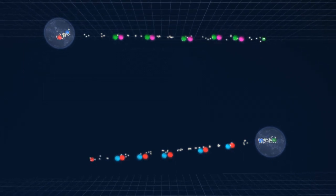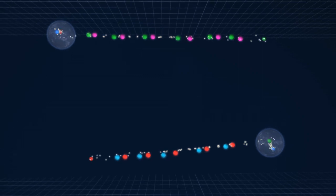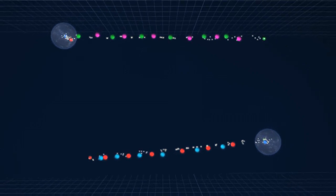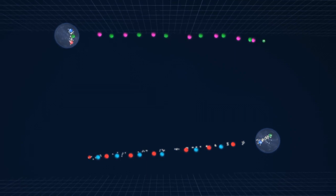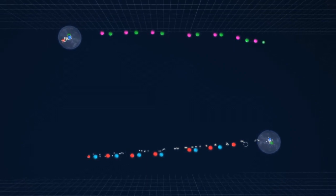The quarks continue to move apart from each other, once again stretching the gluon field between them. The gluon field breaks again by forming a quark and an anti-quark pair.